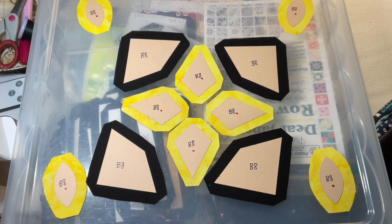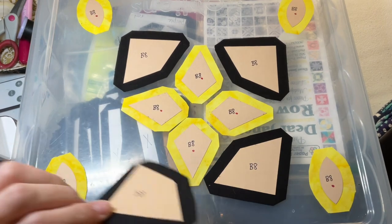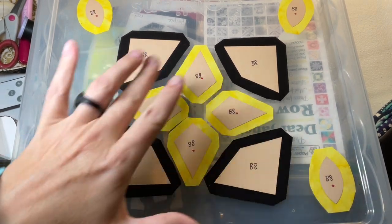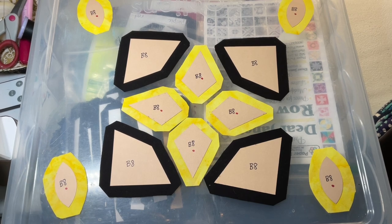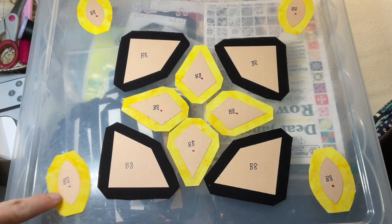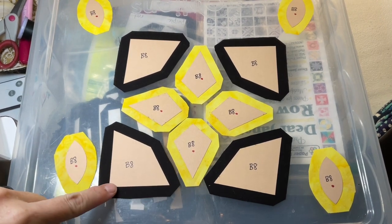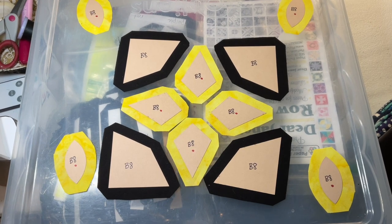So two choices. You can either baste these, then applique, and then put it in the block. Or you can make the block and then applique. For my tastes, I think it's a little easier to baste these and then applique the footballs onto them and then put them in the block. So that's what I'll do.